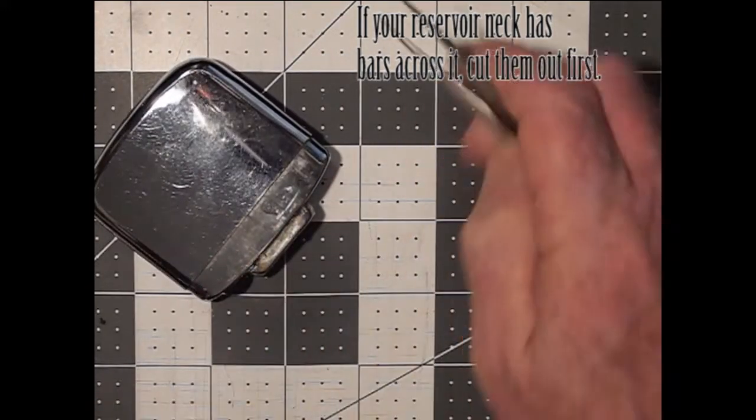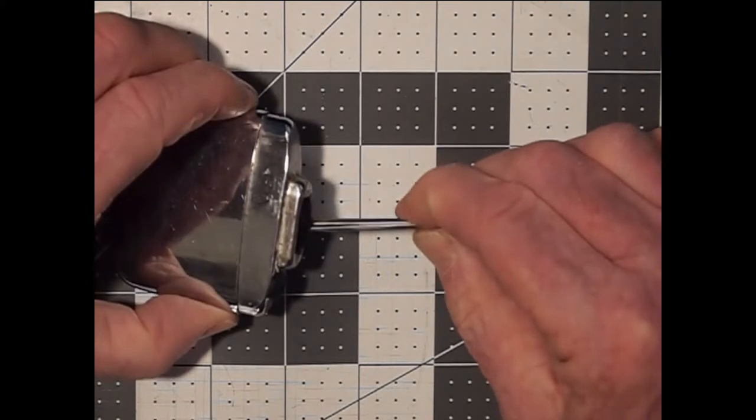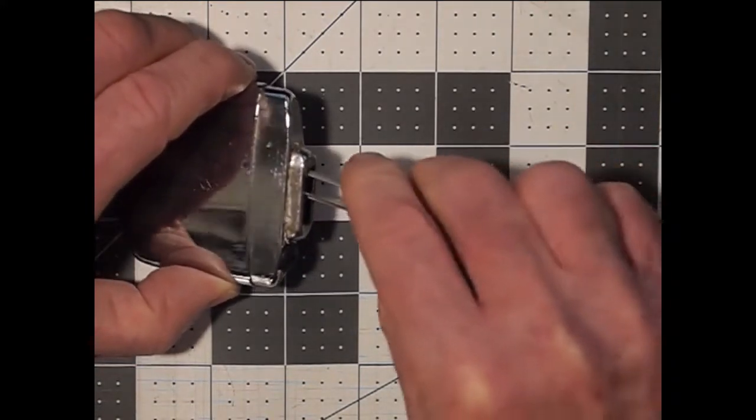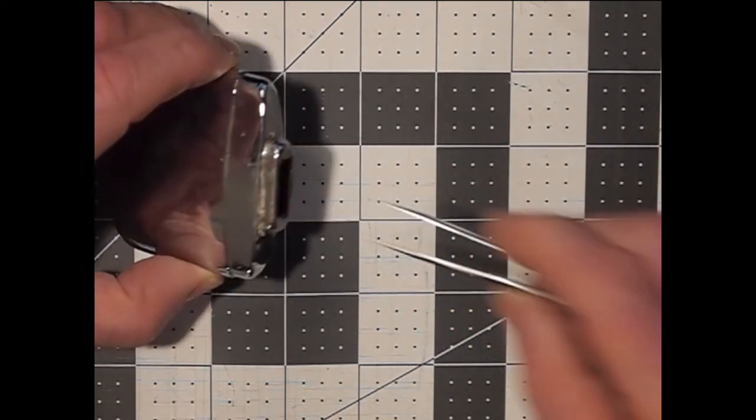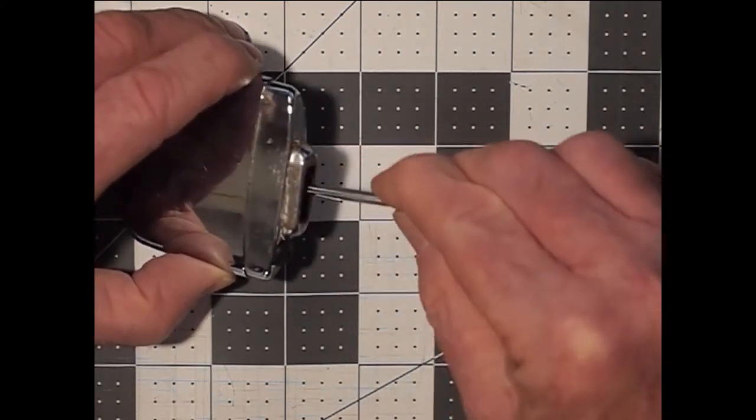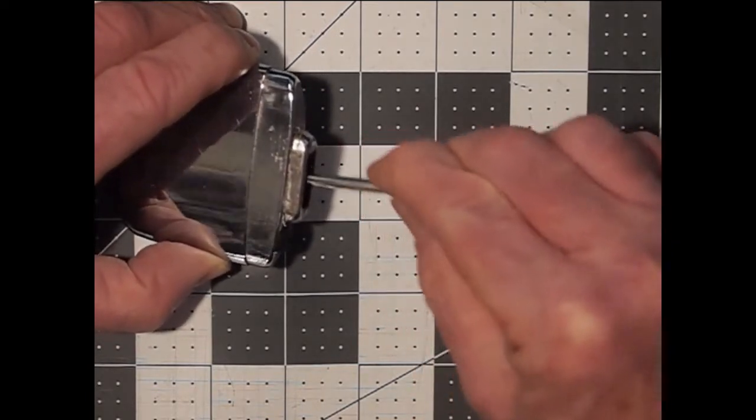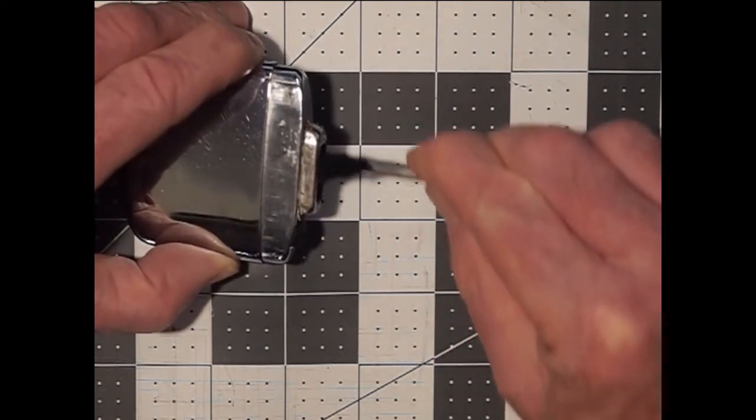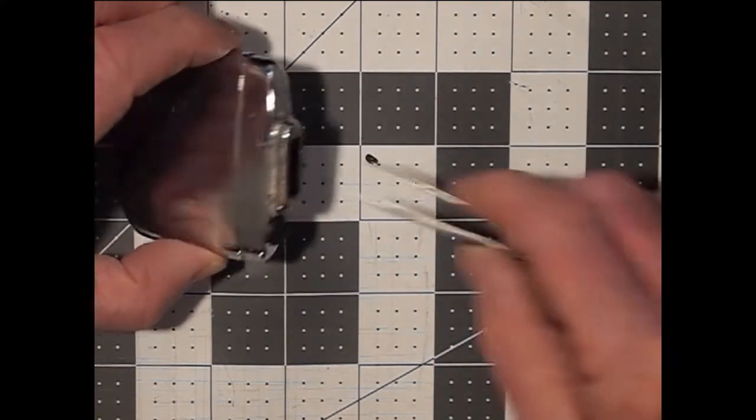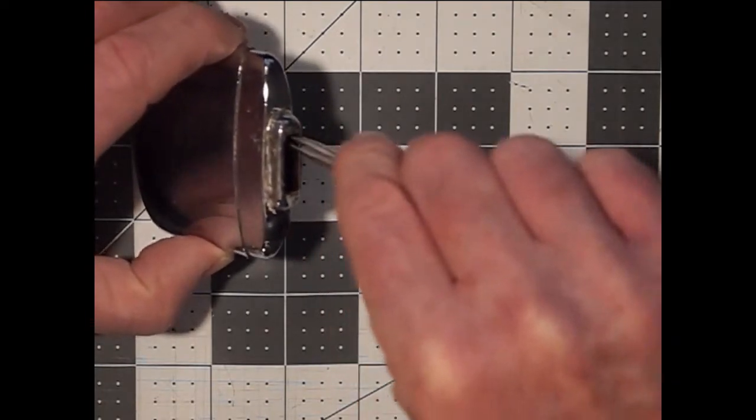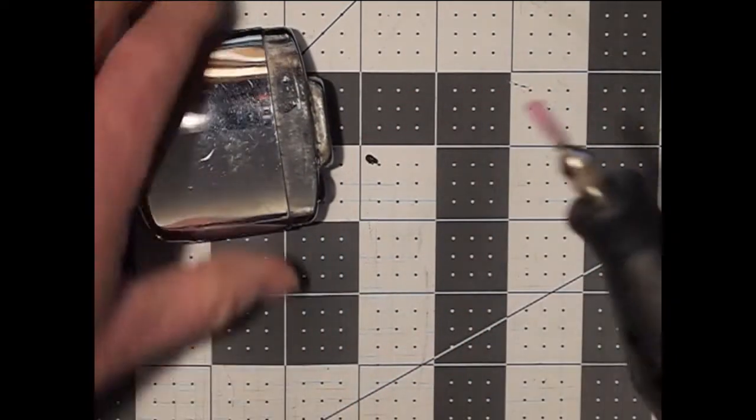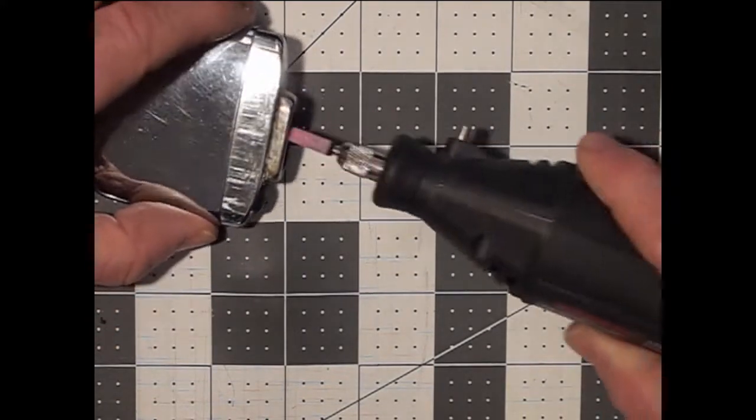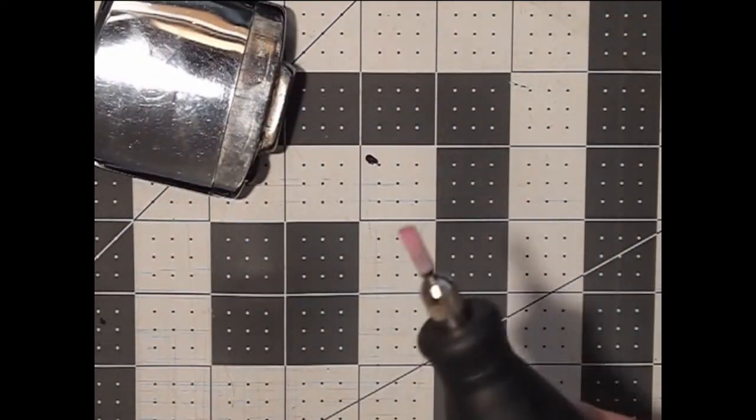And then take your tweezers and remove a corresponding amount of packing from the reservoir. In this case I'm removing carbon felt that was previously installed. You're probably going to have cotton in yours in which case you can remove an appropriate amount of cotton. Now I can get my tool in there without getting bound up on my packing material.